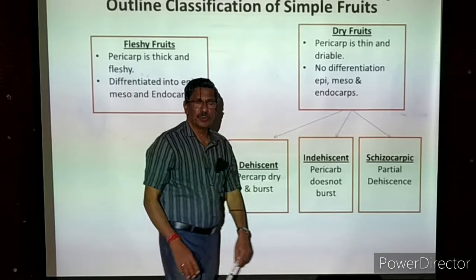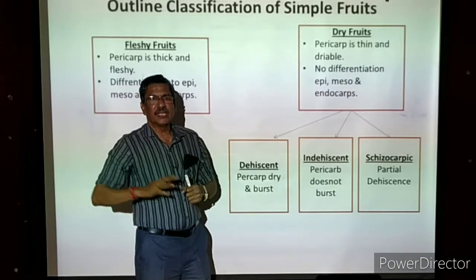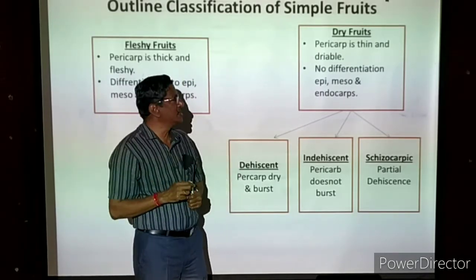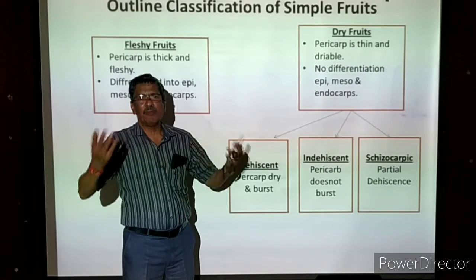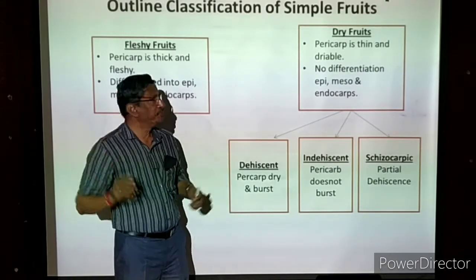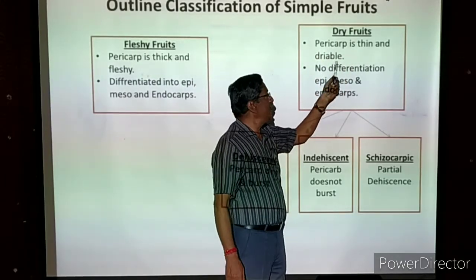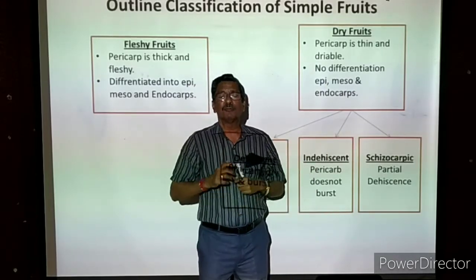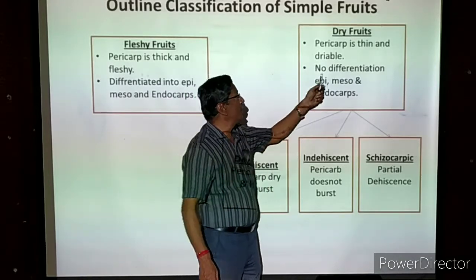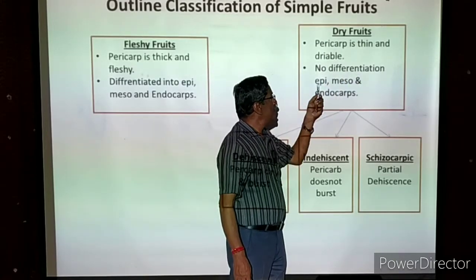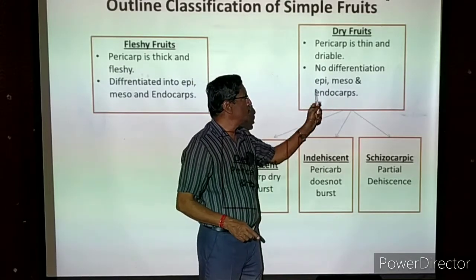Now we come to the dry fruit. In many types of plants, the pericarp is very thin — we cannot distinguish epicarp, mesocarp, or endocarp. It is very thin, so it can dry easily. When exposed to sunlight, water evaporates and the wall of the fruit becomes thin and dry — that is called a dry fruit. The pericarp is thin and dryable. Unlike fleshy fruits like mango, which decay rather than dry, dry fruits can easily dry out. There is no differentiation of epicarp, mesocarp, and endocarp.